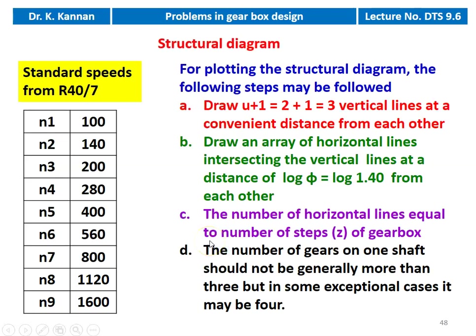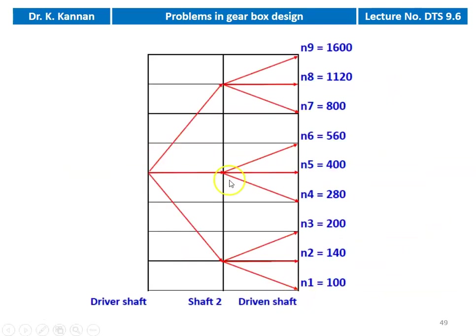Now we have to draw the structural diagram. The procedure is: draw U+1 vertical lines — U is 2 (number of stages), so 3 vertical lines at a convenient distance. Draw an array of horizontal lines intersecting the vertical lines at a distance of log φ = log 1.40 from each other. The number of horizontal lines equals the number of steps, Z = 9. The number of gears on one shaft should generally not exceed 3, though in exceptional cases it may be 4. The structural diagram shows the number of gears on each shaft. We have two stages: first stage from the driver shaft to shaft 2, and the second stage from shaft 2 to the driven shaft.